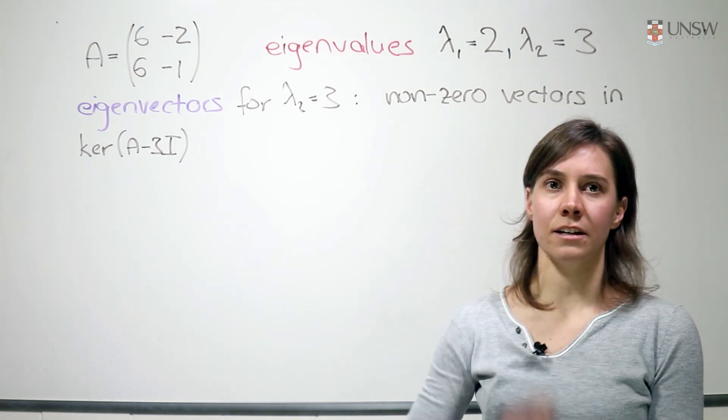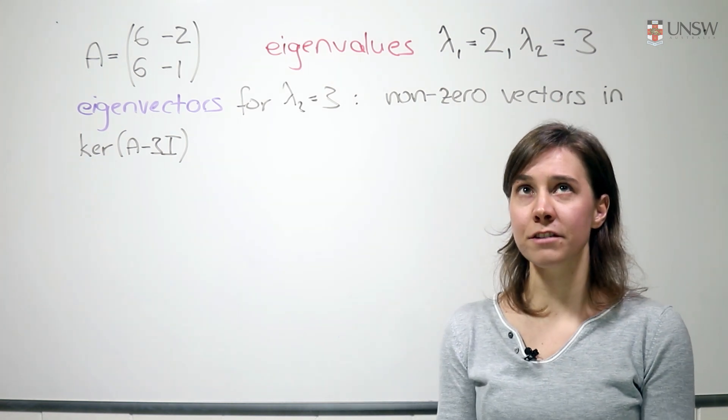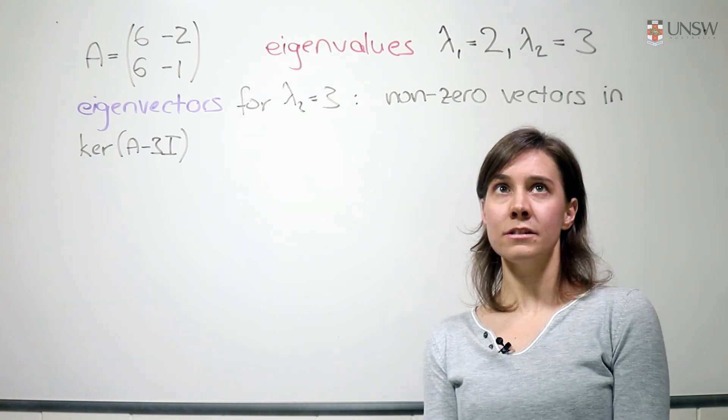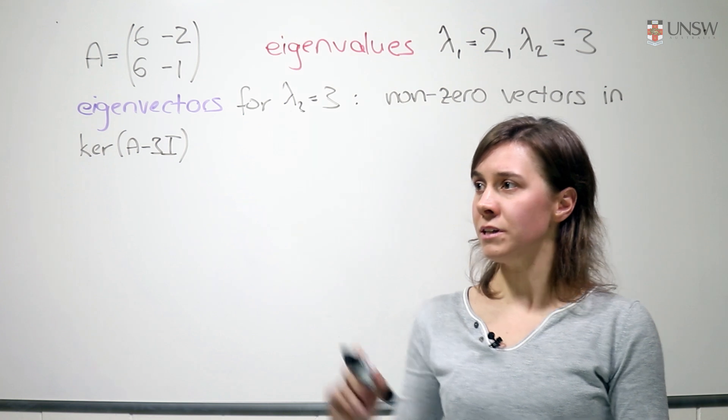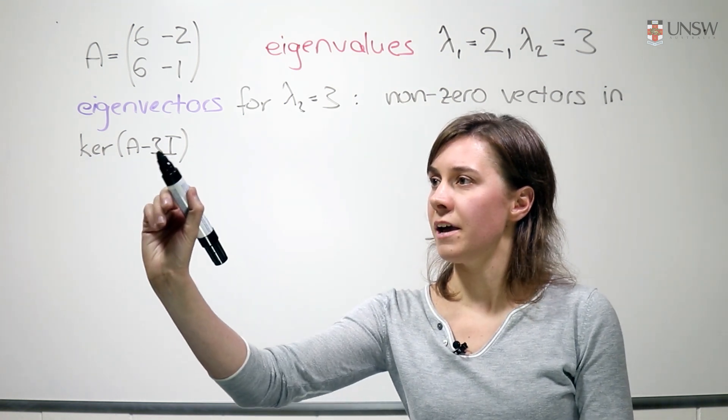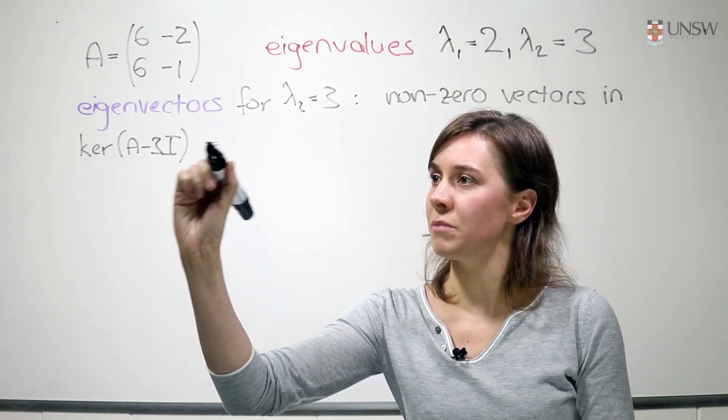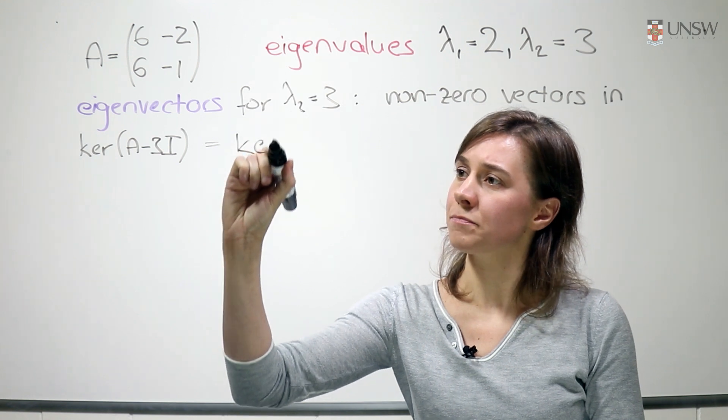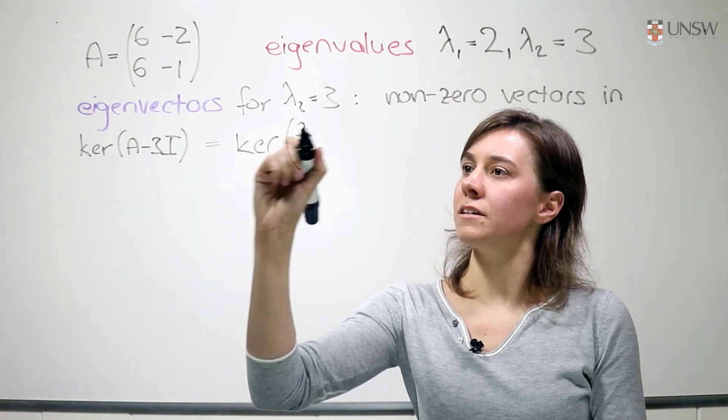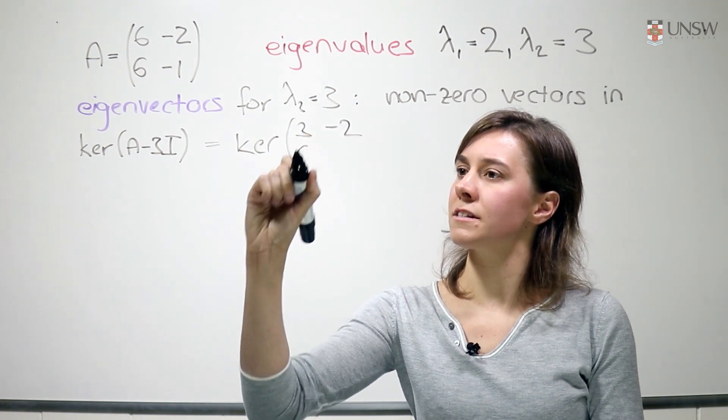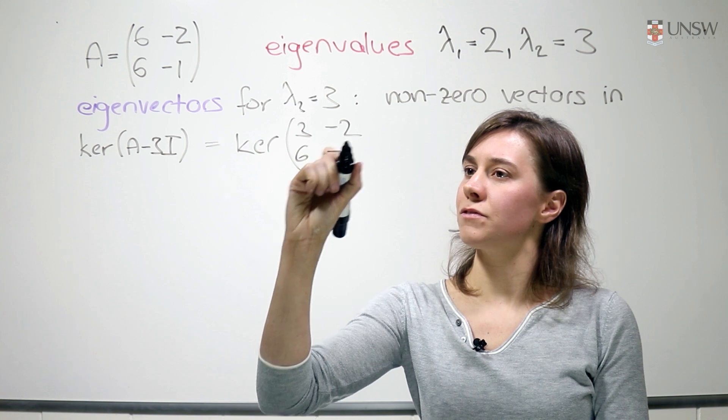So that's exactly the case we're in right here. We've got two distinct eigenvalues and therefore we know that the corresponding kernels are one dimensional. So here, for lambda 2 equal to 3, we'd want to look at the kernel of A minus 3 times the identity matrix. So this is the kernel of 3 minus 2, 6 and minus 4.